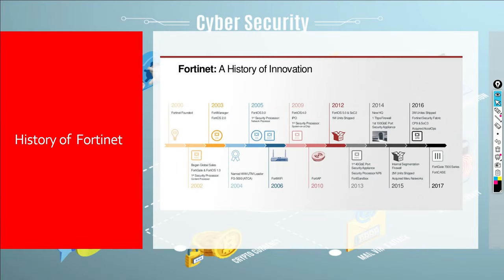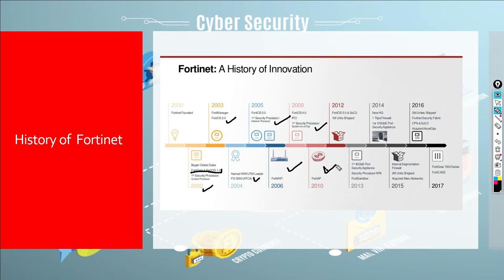Looking at the history of Fortinet: it started in 2000, and in 2002 they launched FortiGate and FortiOS 1.0. After that came FortiManager, then UTM, then security processors, Wi-Fi, and a security processor chip. They then shipped FortiAP and reached 1 million devices shipped.